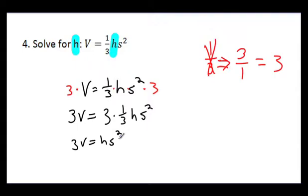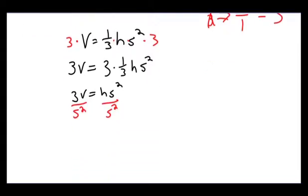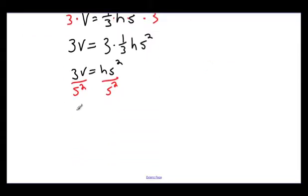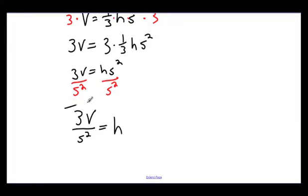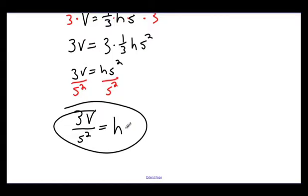Now it's time to divide to get H by itself. So I divide by S squared. Scroll down so I have a little more space. I have 3B divided by S squared equals H. H is isolated all by itself. We have finished our problem.